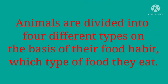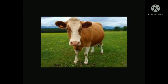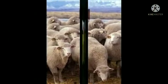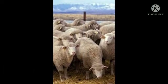Animals are divided into four different types on the basis of their food habit — what type of food they eat. We know that herbivorous animals eat plants and plant parts, for example, cow, sheep, goat, giraffe, zebra, etc.